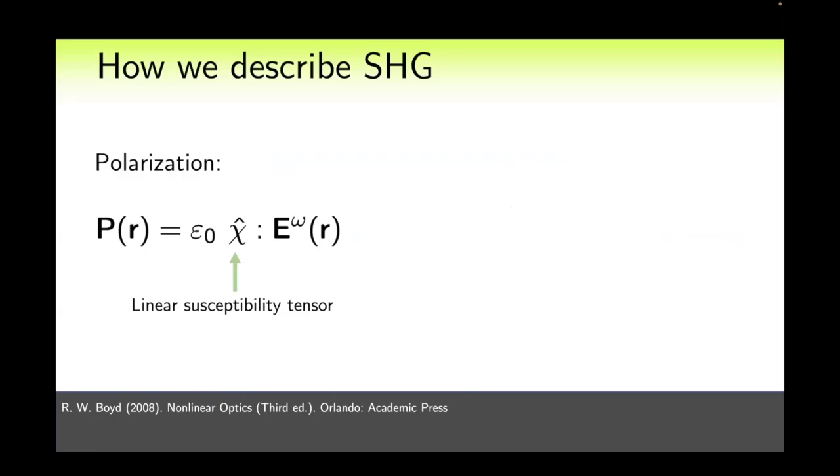So how do we usually describe second harmonic generation? In linear optics the polarization or dipole moment per unit volume is described by this simple formula where chi is linear susceptibility tensor and E is electric field in some particular point described by radius vector.